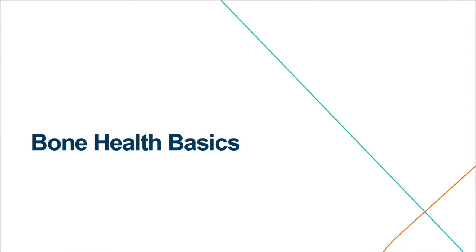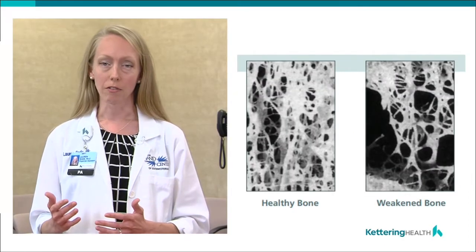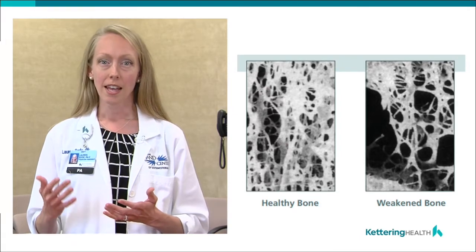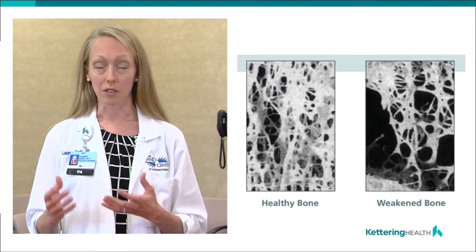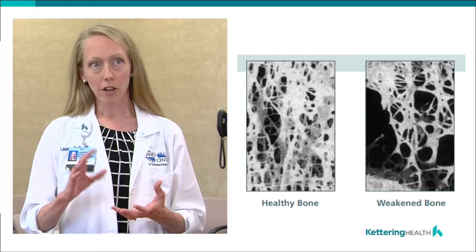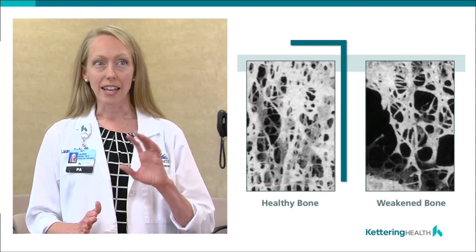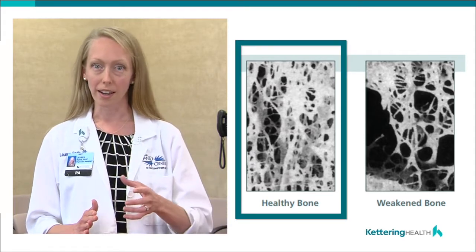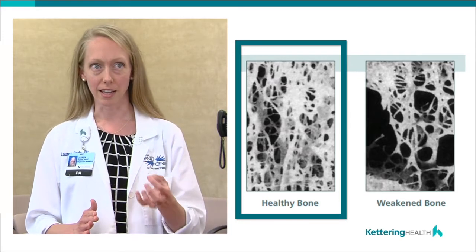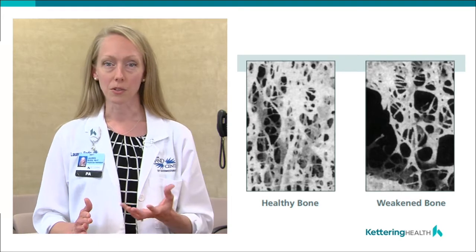We'll go through a quick anatomy review of bones. Bones have two main portions: the outer layer, or cortical bone, and the inside layer, called the trabecular or spongy bone. Looking at two pictures on the right, the healthy bone on the left side shows a lot of white area, representing that dense, healthy bone tissue — that's what normal bone is supposed to look like.